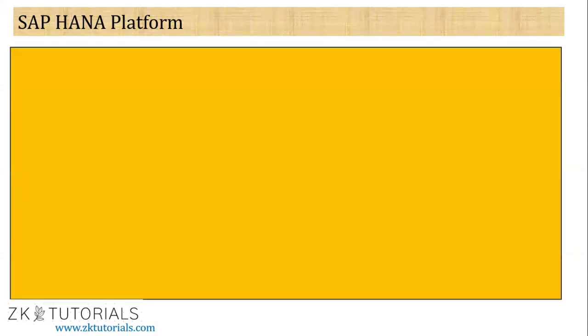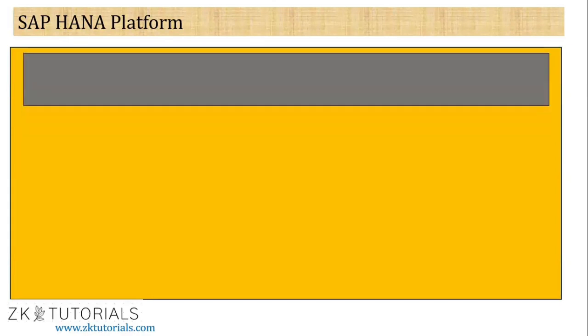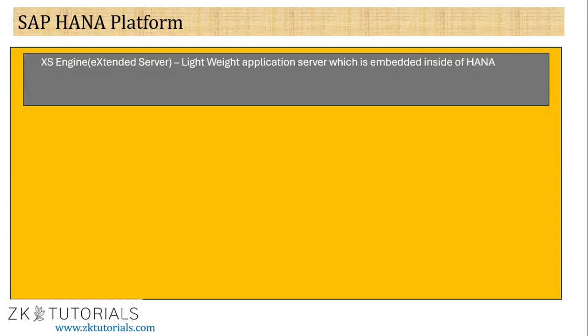The first component as part of SAP HANA platform is called XS Engine. What does XS stand for? XS stands for Extended Server. That's the first component of the SAP HANA platform, which is called the XS Engine — the Extended Server Engine.